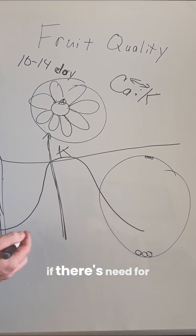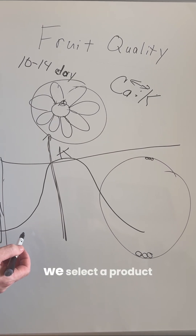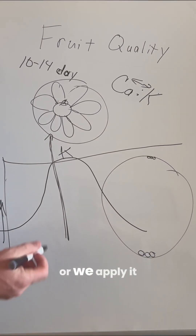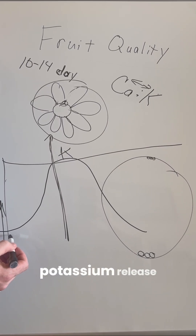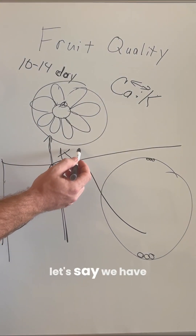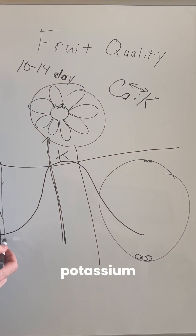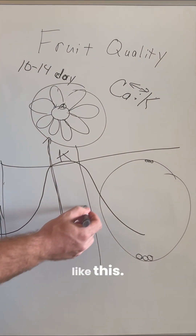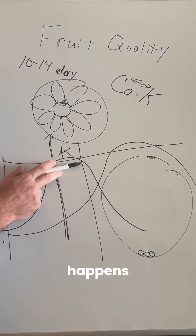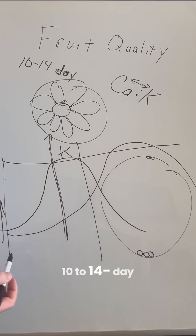If there are potassium needs and applications are required, we select a product with a slower release curve or apply it later so that peak potassium release occurs during the cell expansion stage — after the cell division stage — rather than during this initial 10 to 14 day window after pollination.